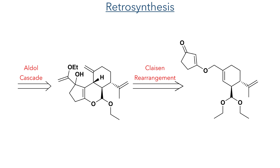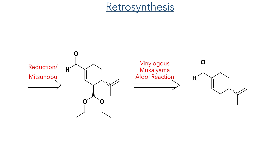This tricyclic intermediate common to all of these compounds could be synthesized using an aldol cascade of a tricyclic compound bearing a cyclic acetal. This in turn could be produced using a Claisen rearrangement of an ether diene, which would be installed by reducing an alpha-beta unsaturated aldehyde and coupling it to the enone using a Mitsunobu reaction. The precursor to this could be synthesized using a vinylogous Mukaiyama-Aldol reaction of S-perialdehyde, a relatively cheap starting material which forms the basis of this synthesis.